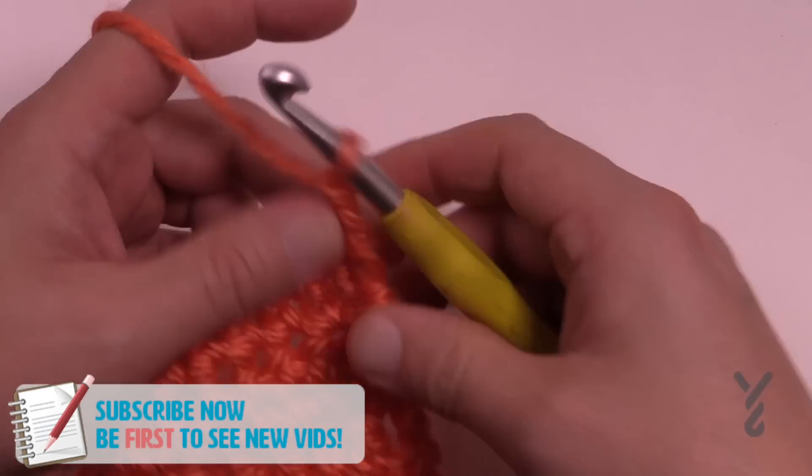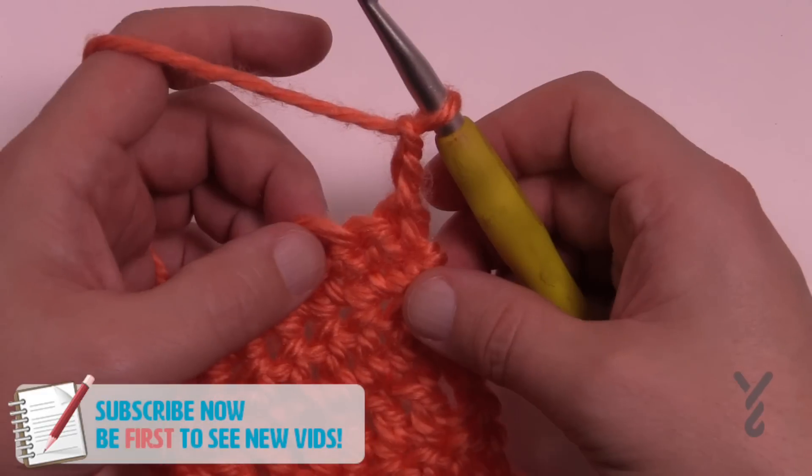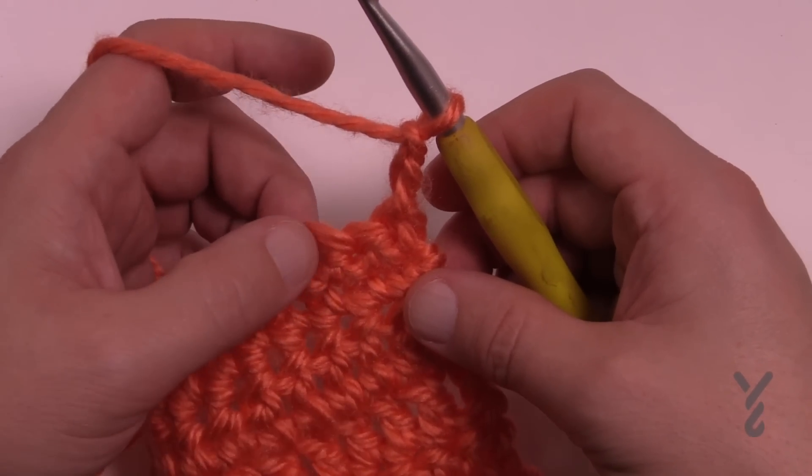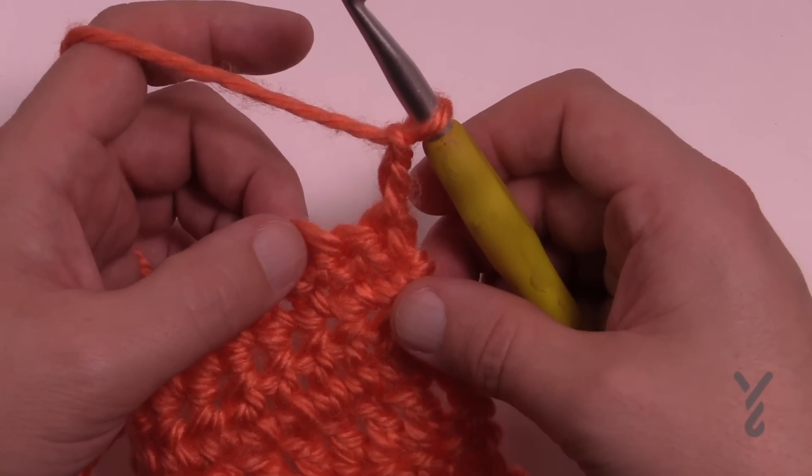So I'm just gonna chain two to begin. So let's say we want to put a half double crochet cluster. The number of times that you put in stitches in there is defined in the pattern itself.